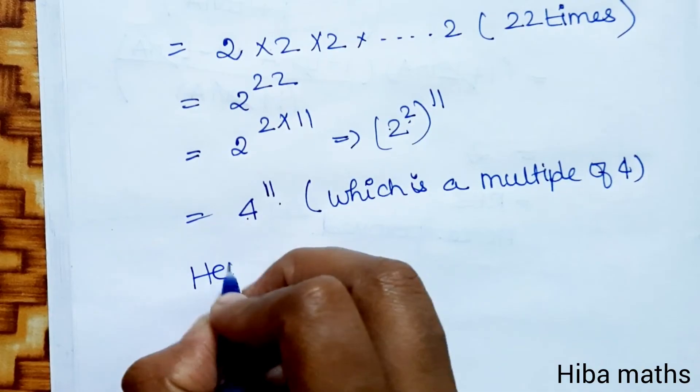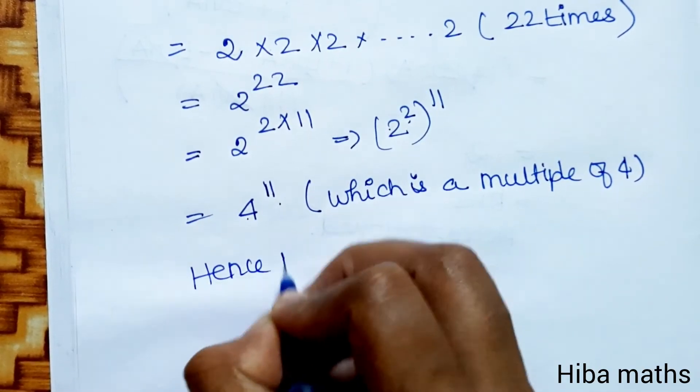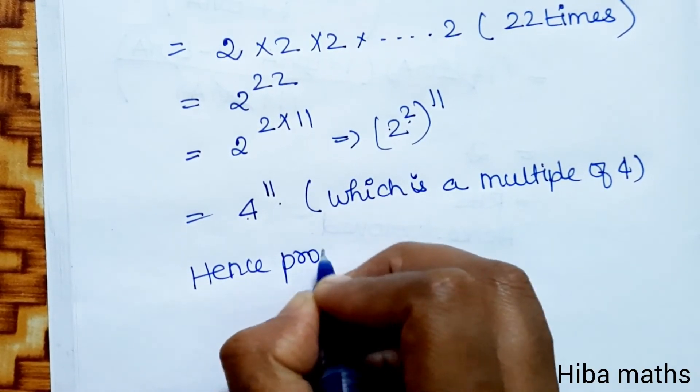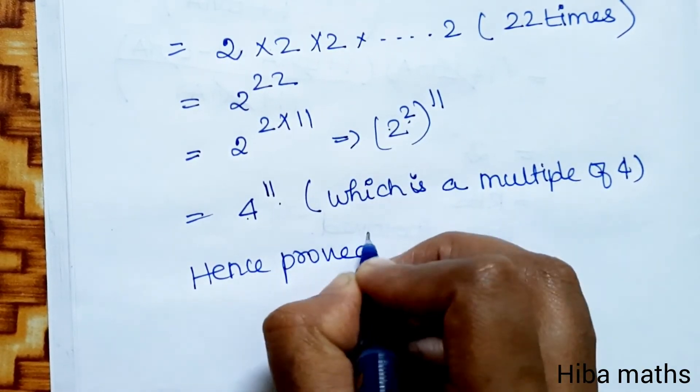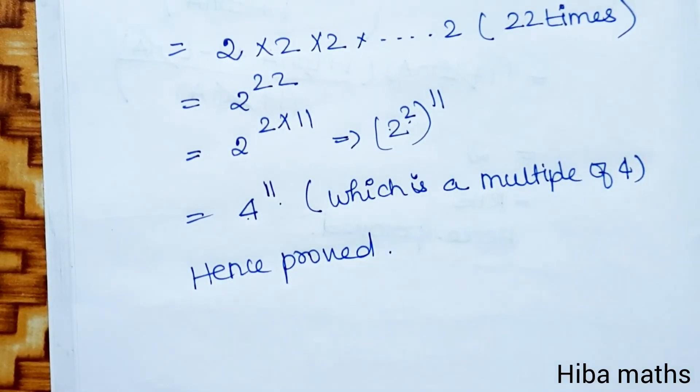Hence proved. The product (1 + tan 1°)(1 + tan 2°)...(1 + tan 44°) is a multiple of 4. Thank you so much for watching.